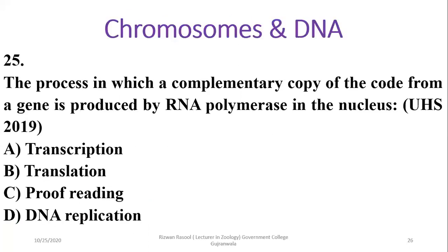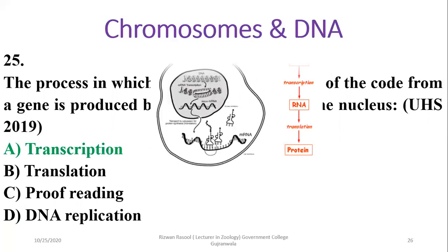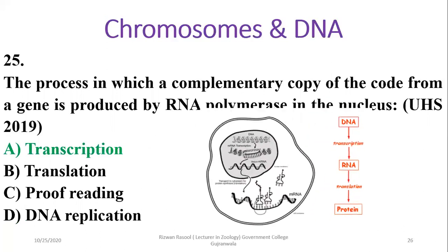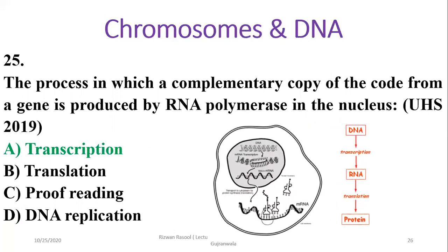Question 25 continued: The process in which a complementary copy of the code from a gene is produced by RNA polymerase in the nucleus is transcription. Alpha is the right option. Translation is the synthesis of protein within the cytoplasm.